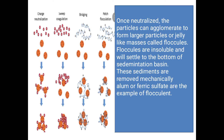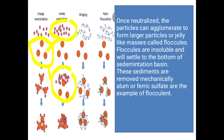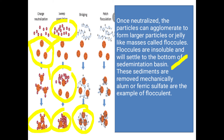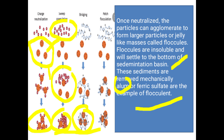Once we add positively charged flocculants, they neutralize the negatively charged particles. When they neutralize each other, they form larger, gel-like masses called flocs. Flocs are insoluble and will settle to the bottom of the sedimentation tank. These sediments are then removed mechanically. The most important flocculants are alum, or ferric sulfate, which are examples of flocculants that drive flocculation.